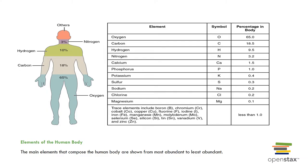Looking at the elements of the human body, oxygen, carbon, hydrogen, and nitrogen make up the predominant portion of body mass. Lesser elements — calcium, phosphorus, potassium, sulfur, sodium, chlorine, magnesium, iodine, and iron — make up a smaller percentage. Trace elements make up less than 0.01 percent and are often part of enzymes. Examples of trace elements include zinc, chromium, and manganese.